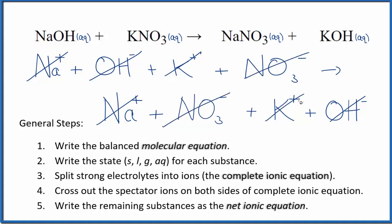We've crossed them all out. They're spectator ions. What that means is we started out with these ions and we've ended up with the same ions, so there is no reaction in the net ionic equation for NaOH plus KNO3.